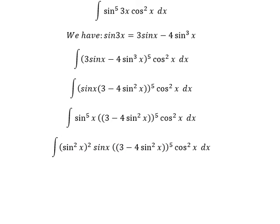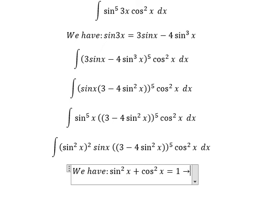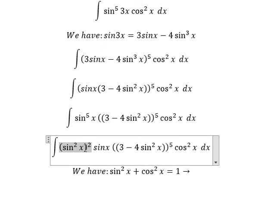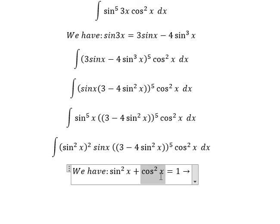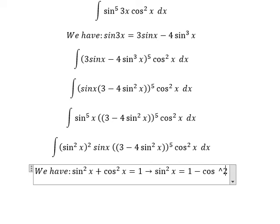So we have the formula: sin²(x) plus cos²(x) equals 1. We have sin²(x) here — we need to put cos²(x) to the right, and we get sin²(x) equals 1 minus cos²(x).